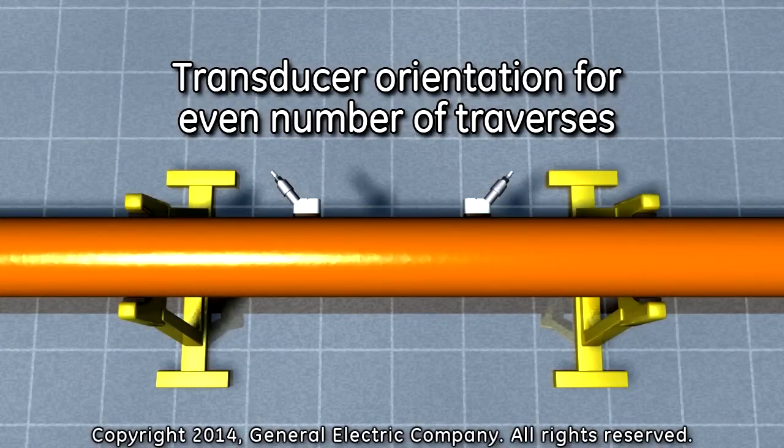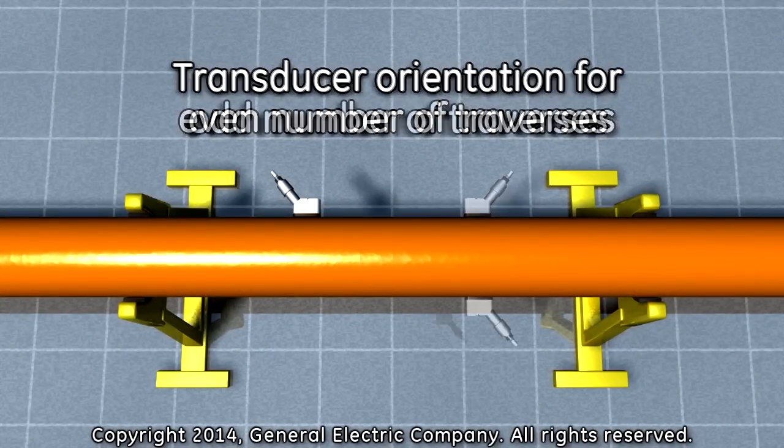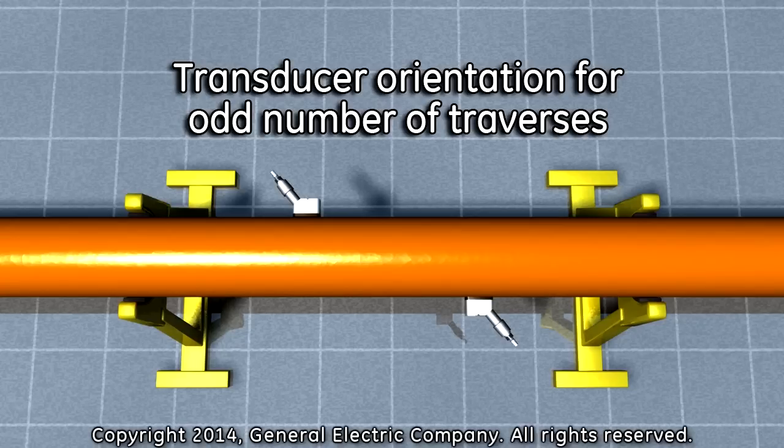For an even number of traverses, the transducers will be mounted on the same side of the pipe. For an odd number of traverses, the transducers will be mounted on opposite sides of the pipe.